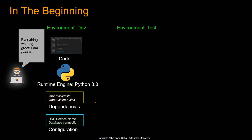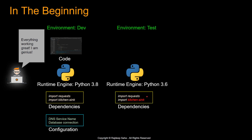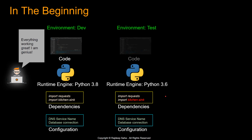Then you move your code to the test environment. The runtime engine there is Python 3.6. So one of your code dependencies works, but the other one — maybe the kitchen sink one — breaks. Your configuration file format also works. So you think, all right, I need to change the code a little bit. I guess that's okay.